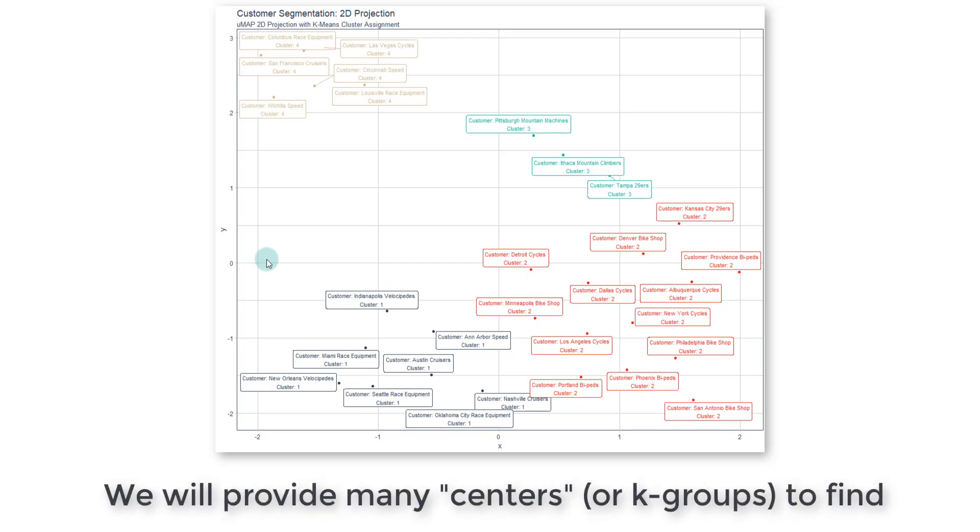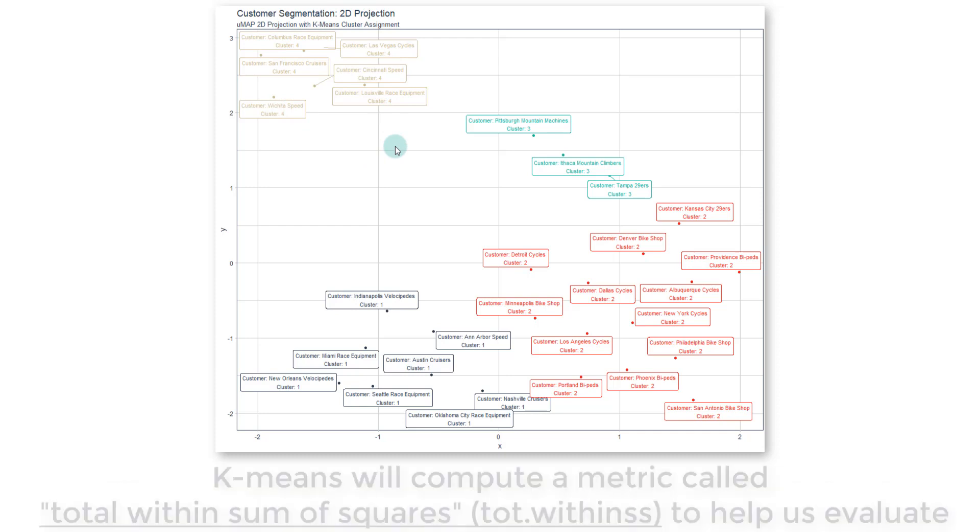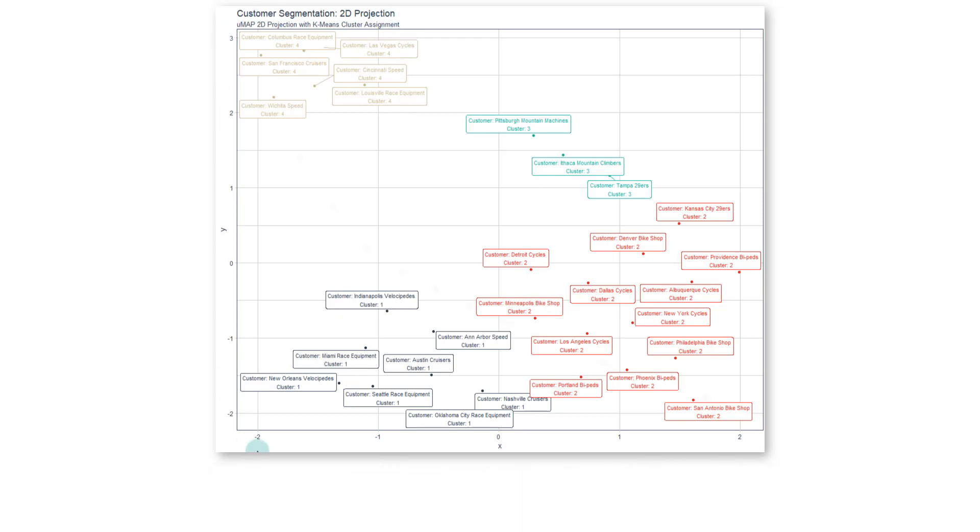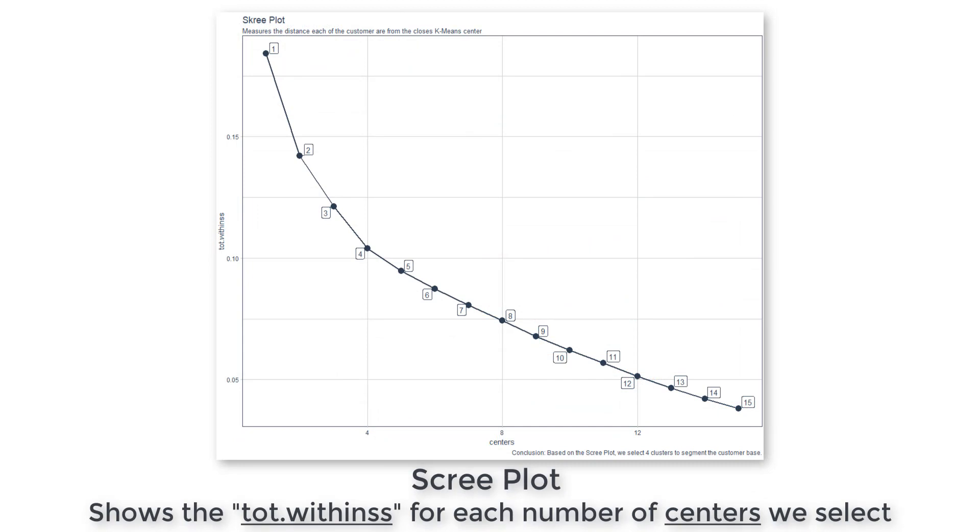What we're going to do is we're going to provide it many different numbers of clusters, and we're going to let the K-Means algorithm compute and decide which customers get picked into these different clusters. And then eventually what we're going to do is we're going to visualize it. So for the K-Means algorithm to work, again, we're going to provide it a number of different centers to choose from.